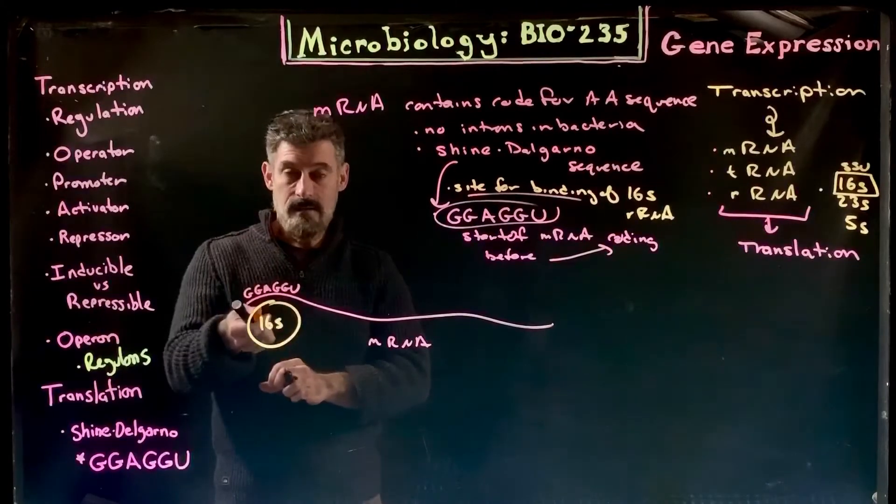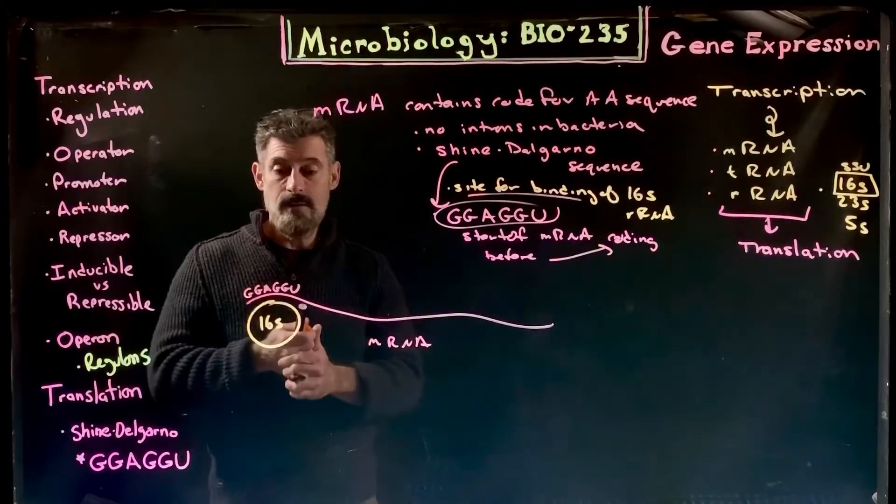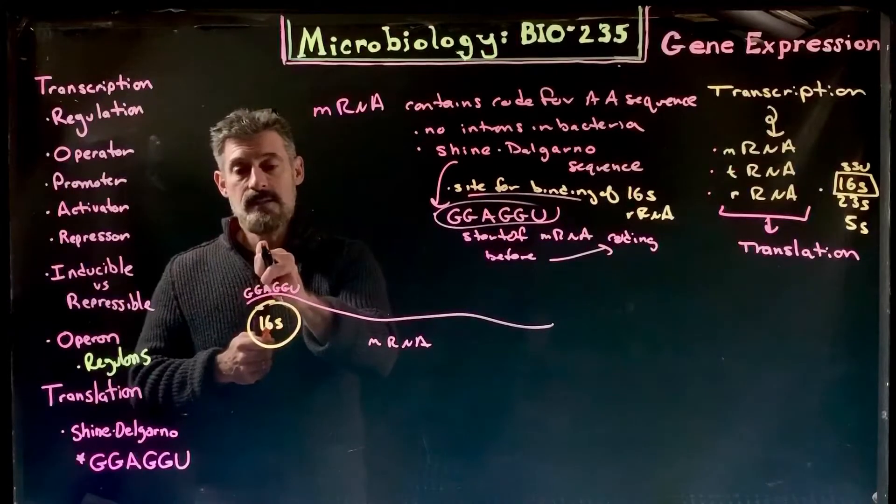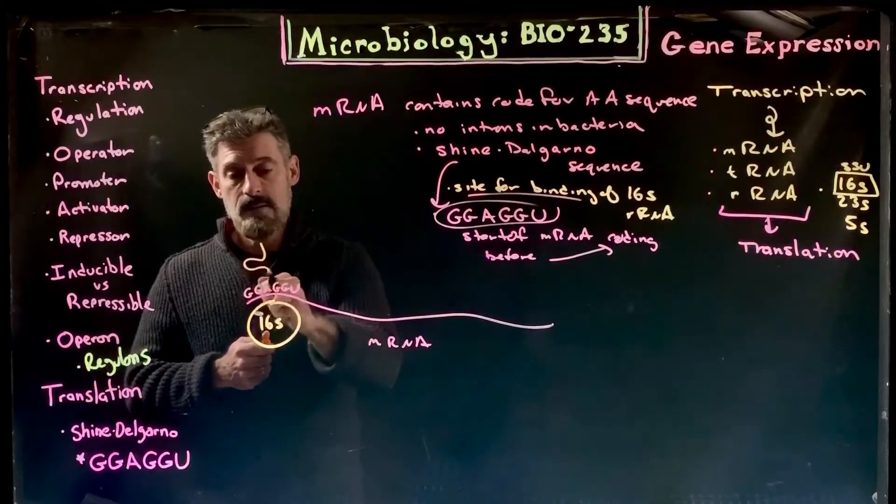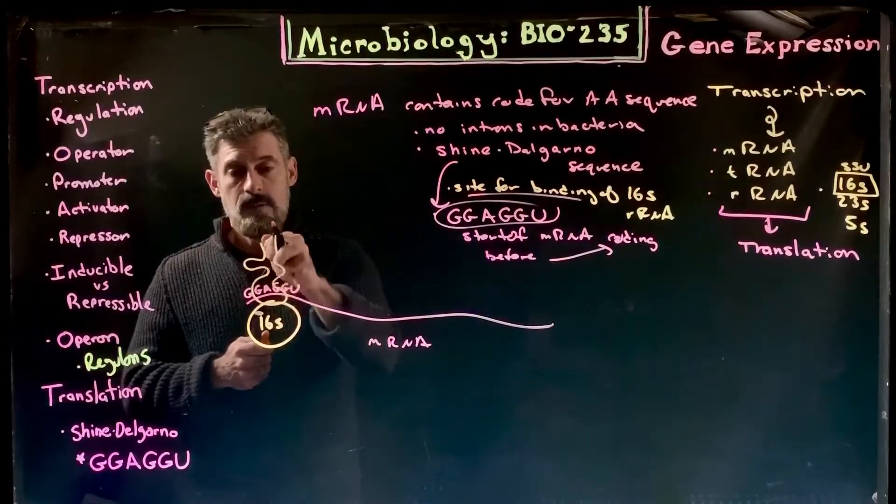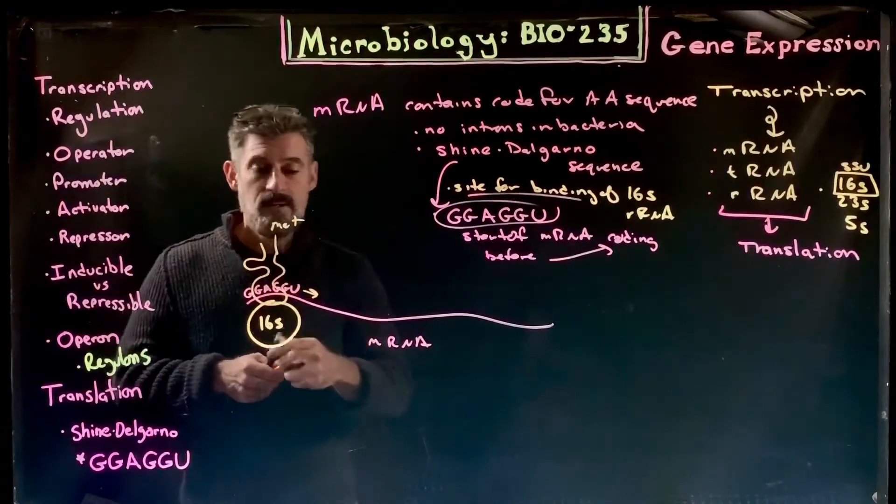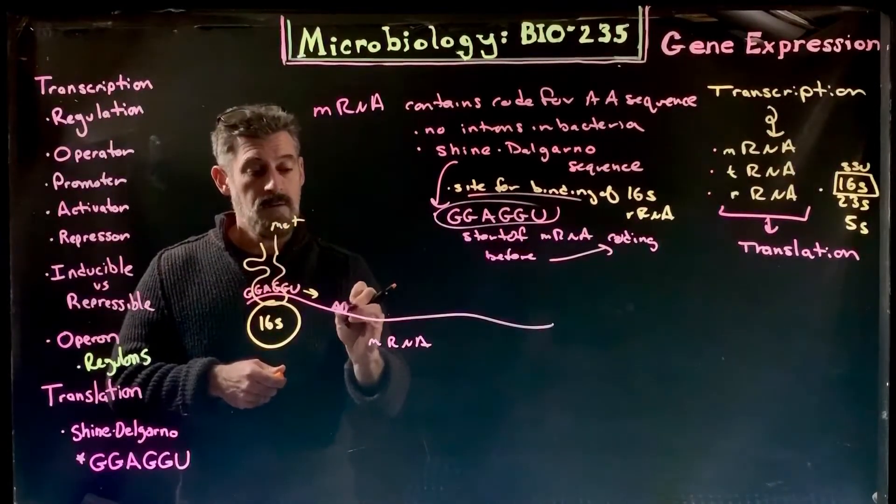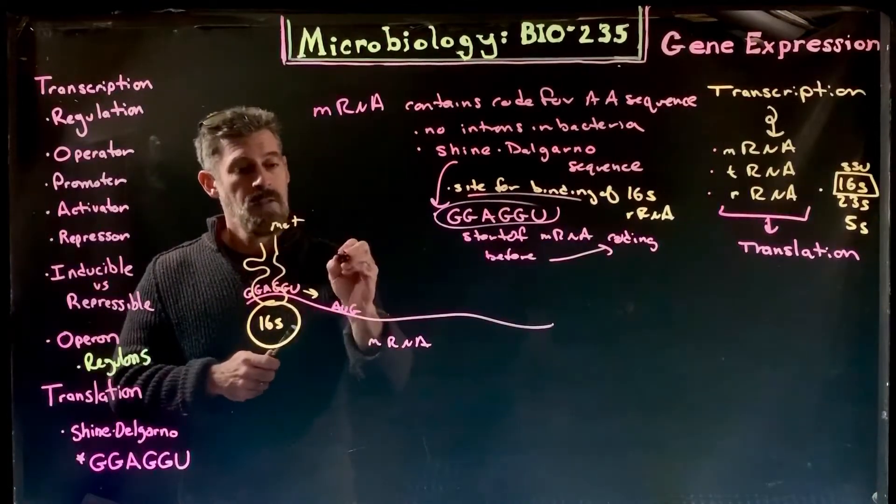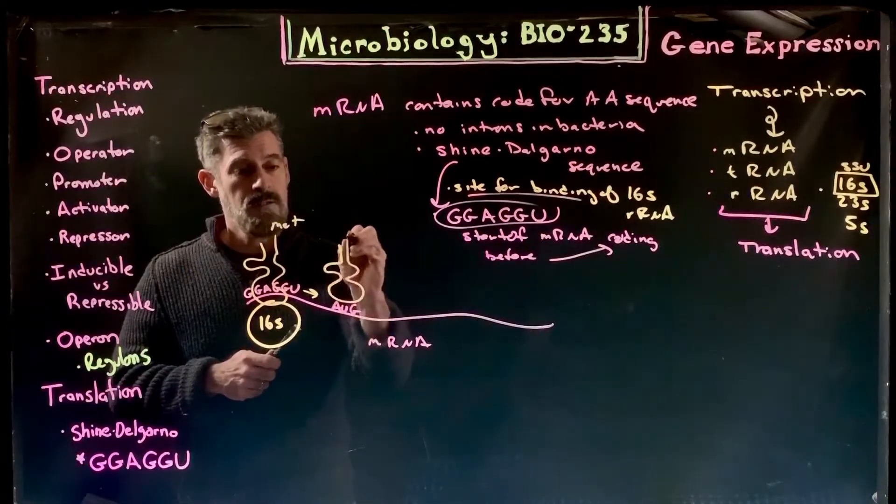The small subunit 16S ribosomal RNA will bind here. That's necessary for initiation. As part of the initiation process you have the methionine transfer RNA that reads until it finds a start codon, AUG.